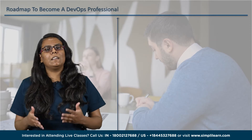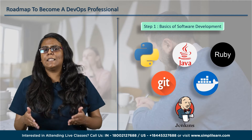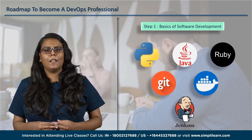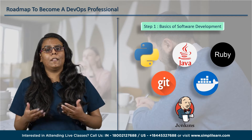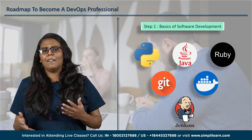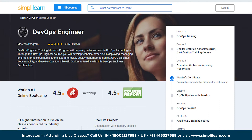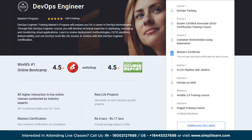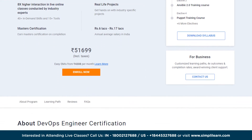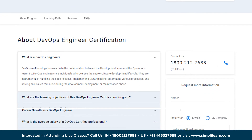First is to learn the basics of software development. To be an effective DevOps professional, it's essential to have a good understanding of software development processes, including programming languages, software development methodologies, and version control tools. You can start by learning programming languages like Python, Java, or Ruby. A DevOps engineer course will prepare you for a career in DevOps technologies, covering deployment methodologies, CI/CD pipelines, observability, and DevOps tools like Git, Docker, and Jenkins.